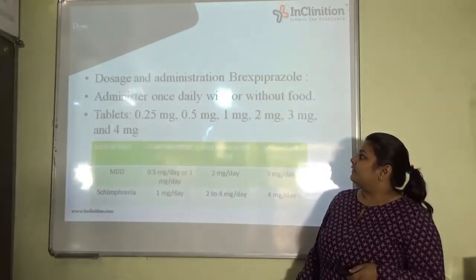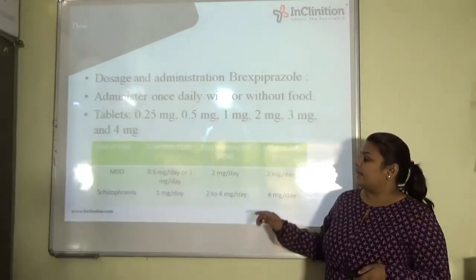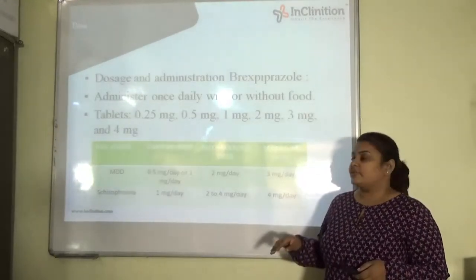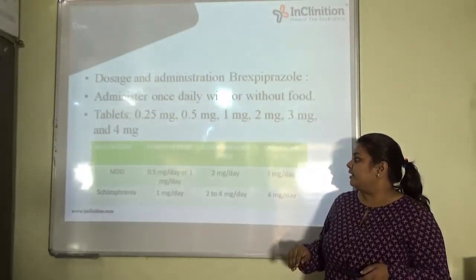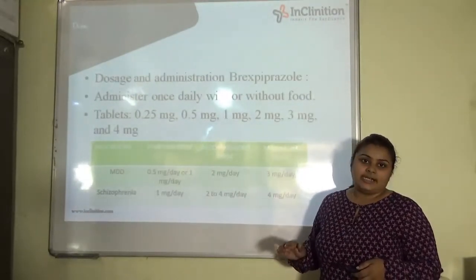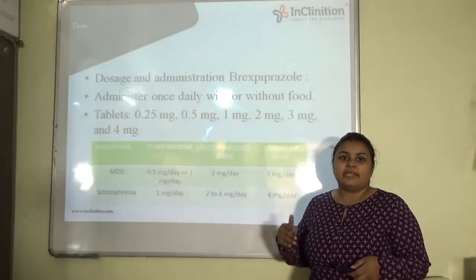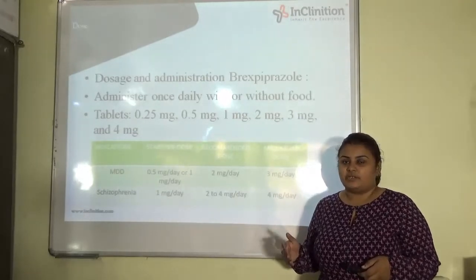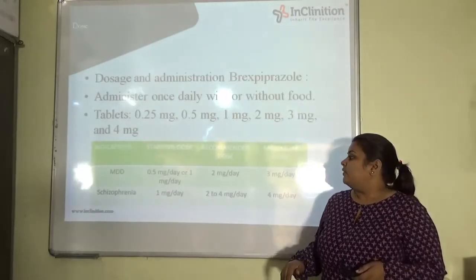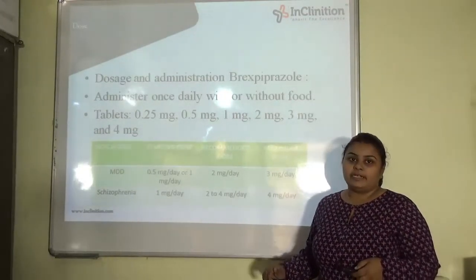The dose given for major depressive disorder is 0.5 mg as a starting dose, and it can gradually be increased depending on the condition of the patient. For schizophrenia, it is 1 mg per day.